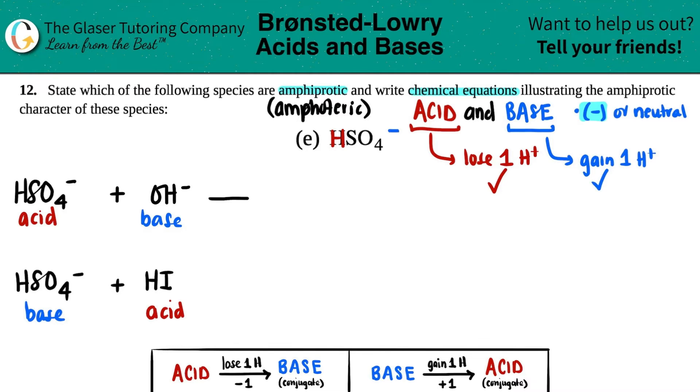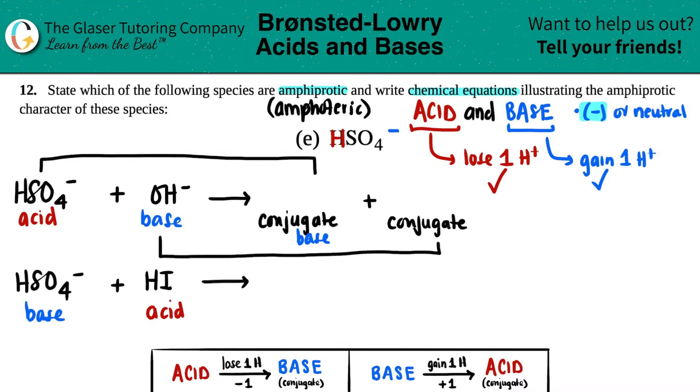Now let's just write the equations. This is where your conjugates come into play. Remember if you are an acid on your left side, you're going to lose that hydrogen, and because you lost that hydrogen you will now turn into your conjugate base. So the acid will always turn into the conjugate base on the other side, and vice versa. If you are a base, since you're going to be gaining that hydrogen, you're going to turn into the conjugate acid.